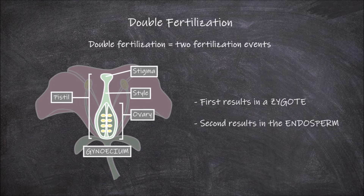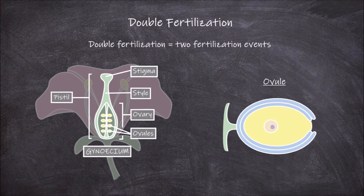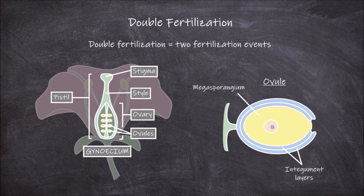And a style, which is the stalk connecting the two. Within the ovary are the ovules. These ovules have two integument layers forming the outside of the ovule, and within this is tissue called the megasporangium. Each ovule has a chalazal end and a micropylar end, which has the micropyle, which is an opening at the end of the ovule.